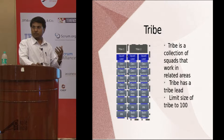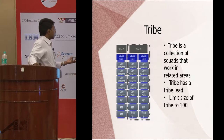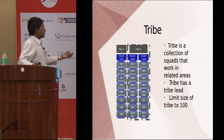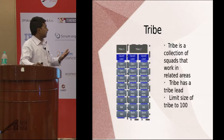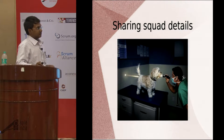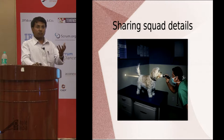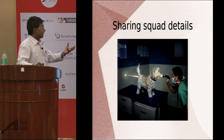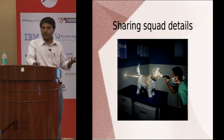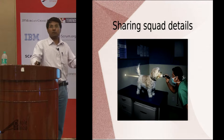Moving on to a bigger organizational structure called the tribe. The tribe is responsible for a major portion of the software, with all squads related together. A tribe can consist of two squads, three squads, or even a single squad, and the size of the tribe is limited to 100. The squad has to be as transparent as possible so everybody knows what the squad is doing and how their work affects others. We want to minimize dependencies and maintain a highly transparent and open system with no hiding of information.